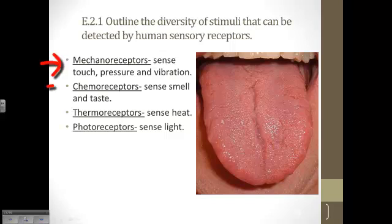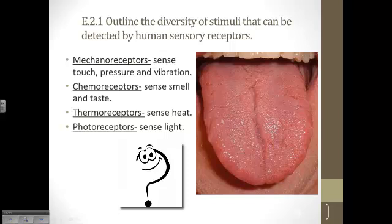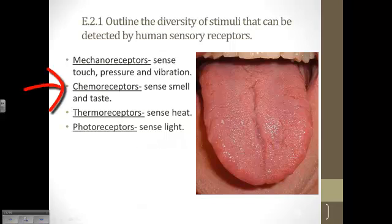mechanoreceptors, chemoreceptors, thermoreceptors, and photoreceptors. And based on the names of those terms, what type of receptor do you think the tongue is? It turns out that it's a chemoreceptor or a chemical receptor. Why?